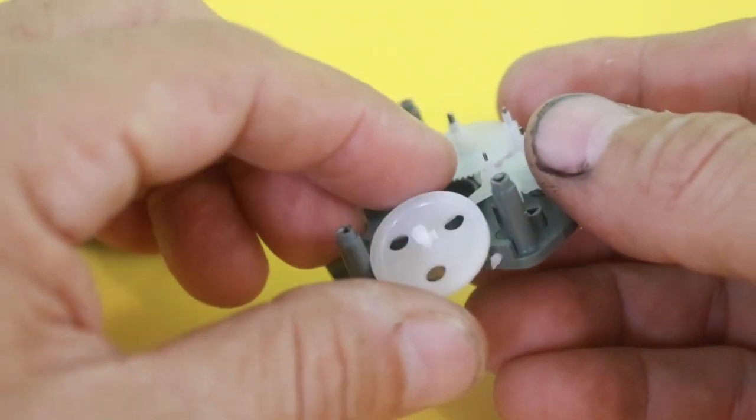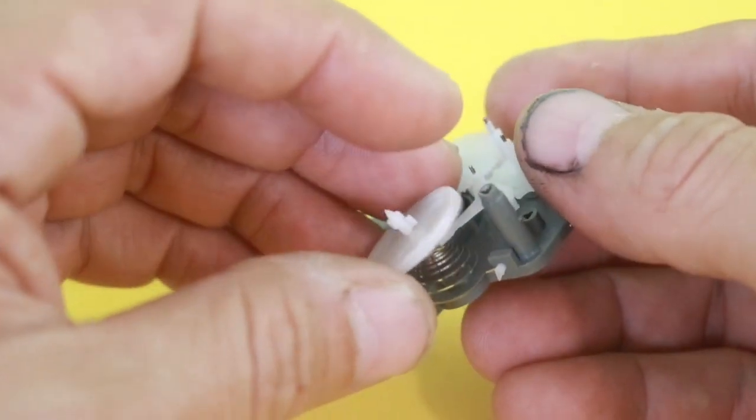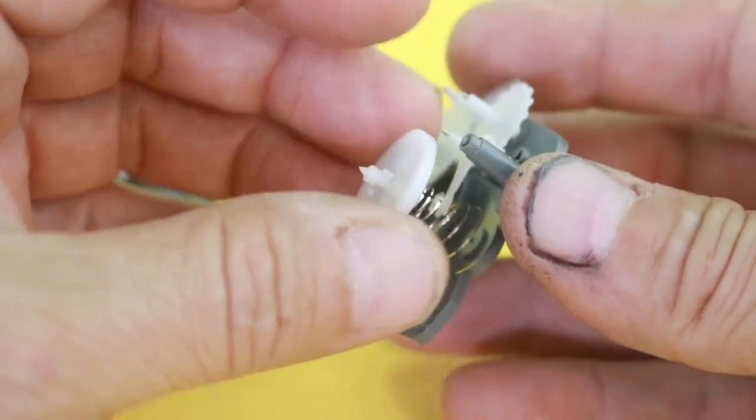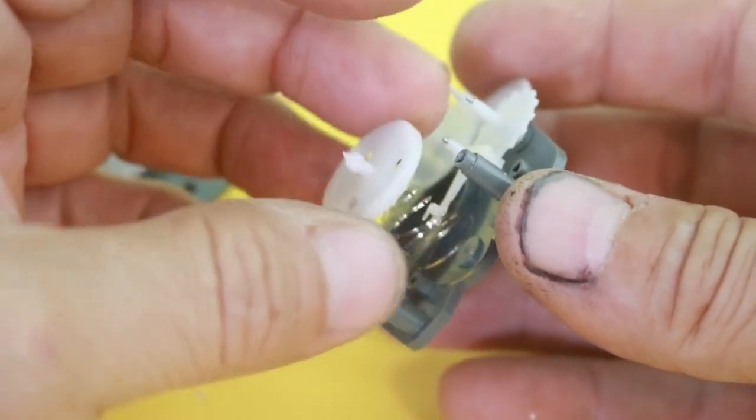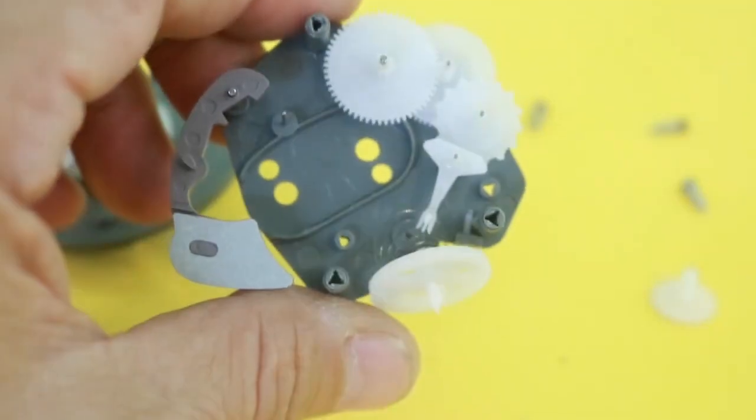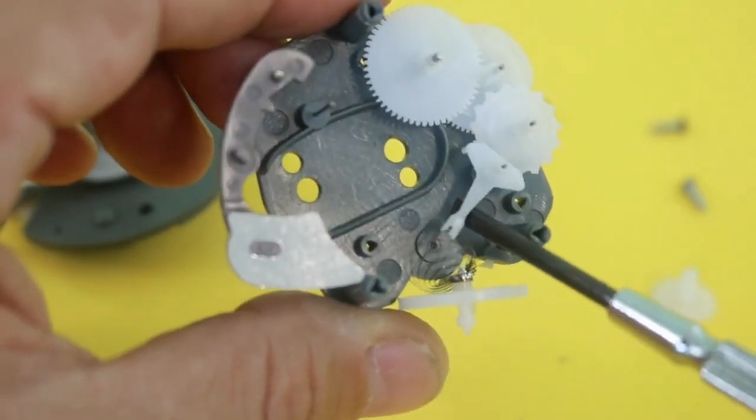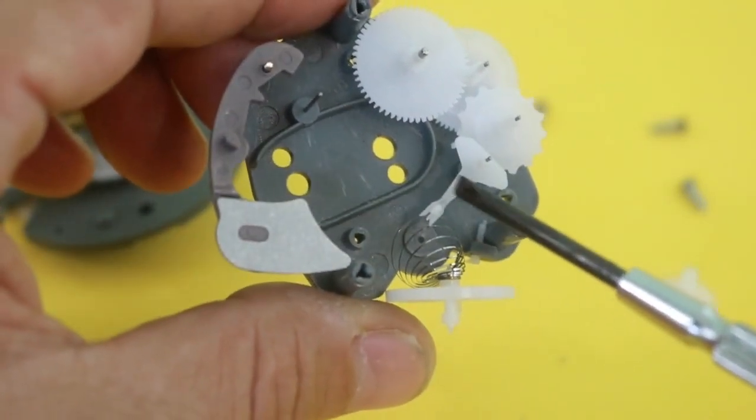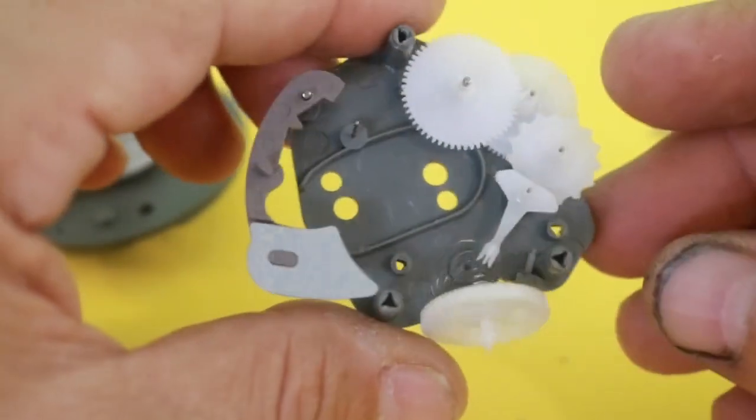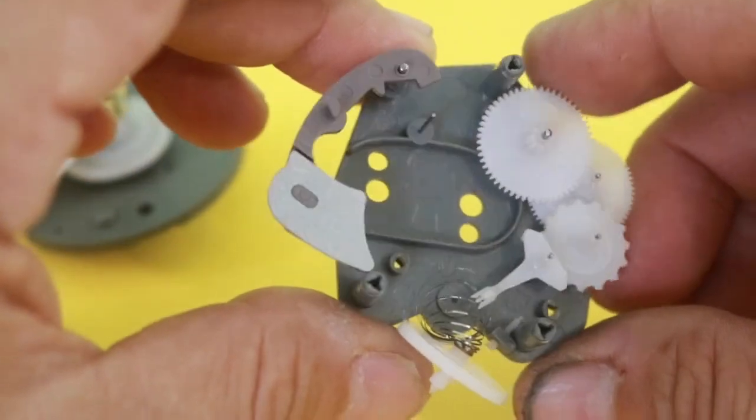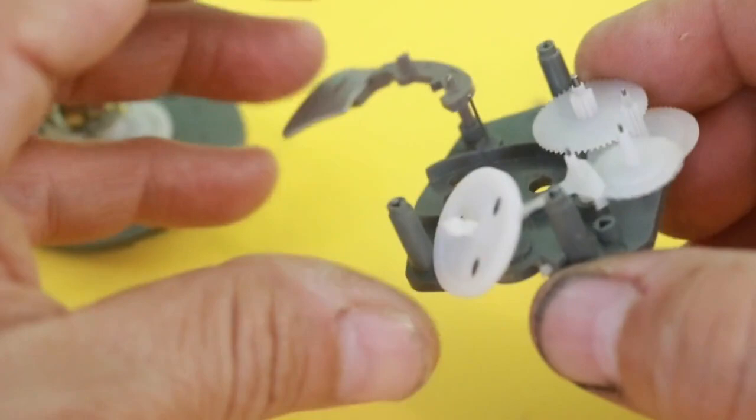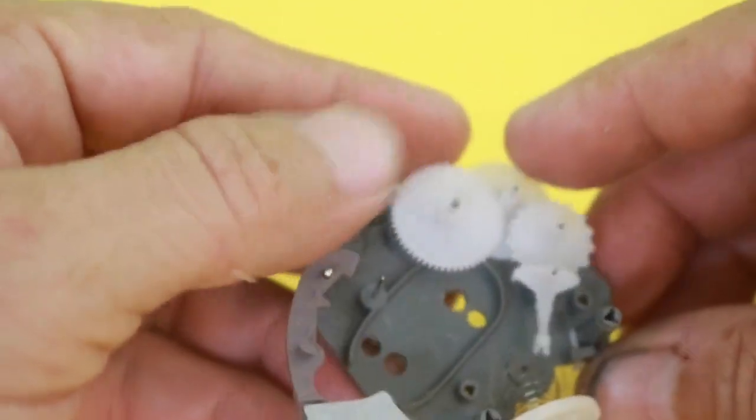This one corresponds, this is the flywheel of the escapement. Here you can see we have another spring that permits the motion from one side to the other and this little fork here that is also a part of the escapement mechanism. As I mentioned before, you can check my videos on escapements in order to see how this piece works and understand how it works in a better way.